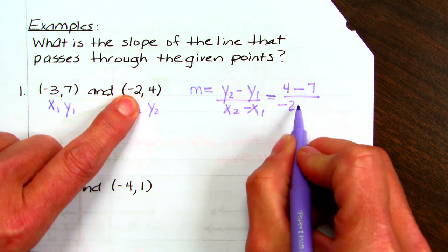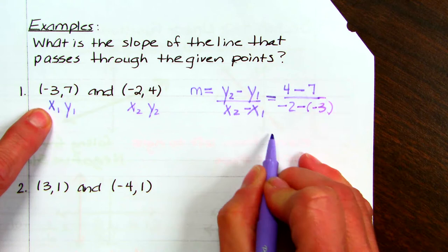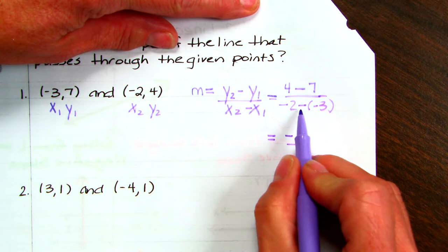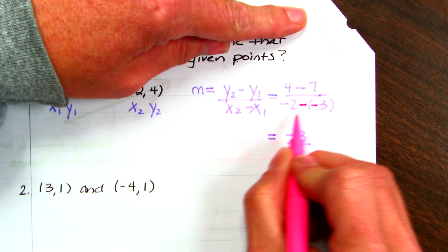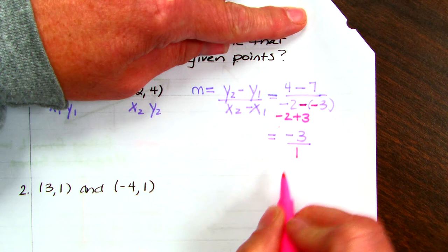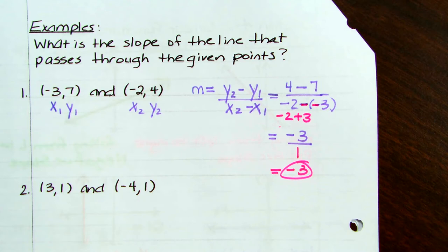Minus, because that's in the formula, and x1 is negative 3. So 4 minus 7 is negative 3. Negative 2 minus negative 3 — two negatives make a positive — so negative 2 plus 3 is 1. The slope of the line through these two points is negative 3, so this line will be going down from left to right.